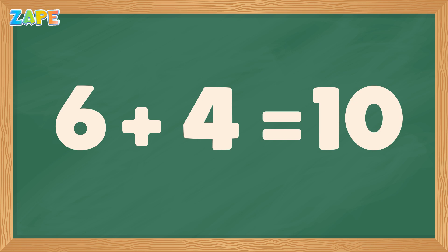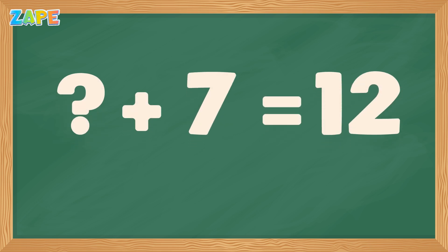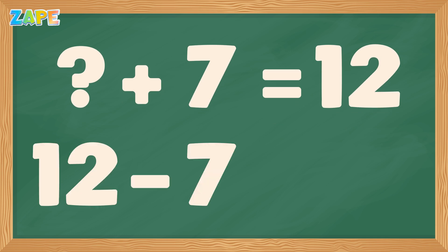Let's try another one. What if the problem is missing value plus 7 equals 12? No worries. Just subtract. 12 minus 7 equals 5. That means the missing number is 5. Subtraction is like a detective. It helps you find the missing clue.